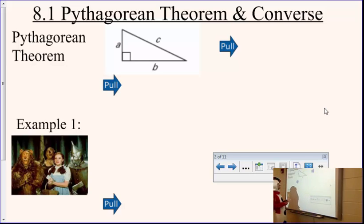It talks about the relationship between the side lengths that we list as A, B, and C. Now it has to be a right triangle because we talk about C being the hypotenuse, which is always across from the 90, and A and B are our legs of the triangle.